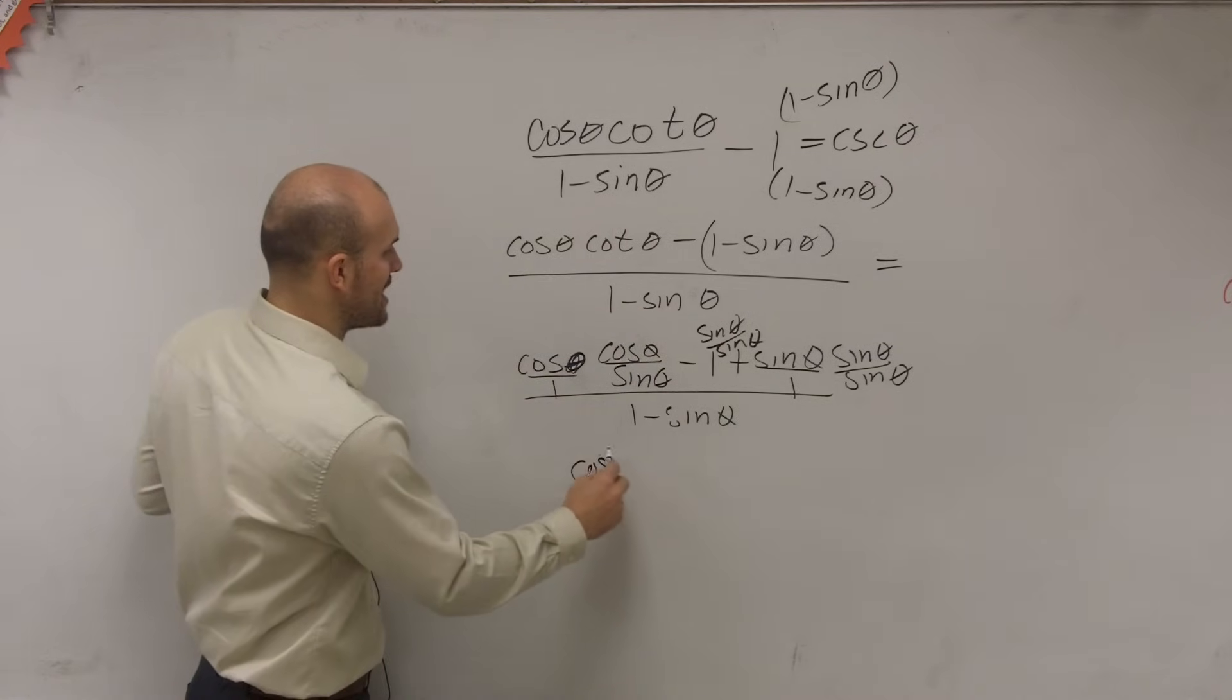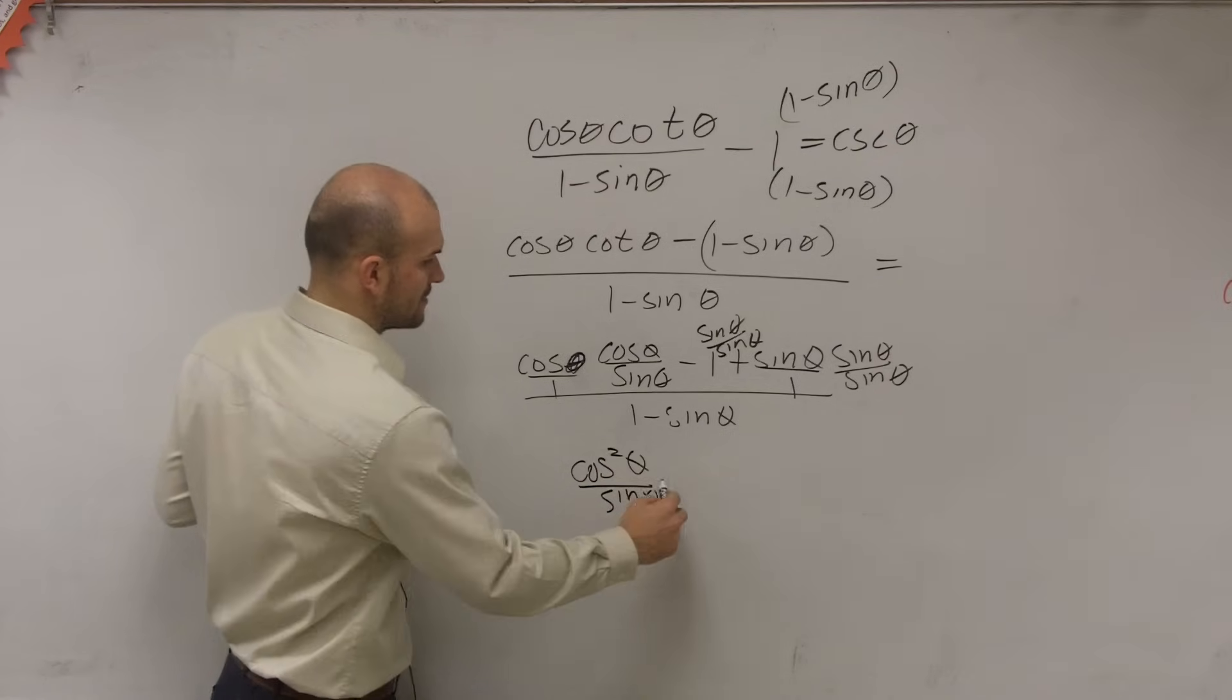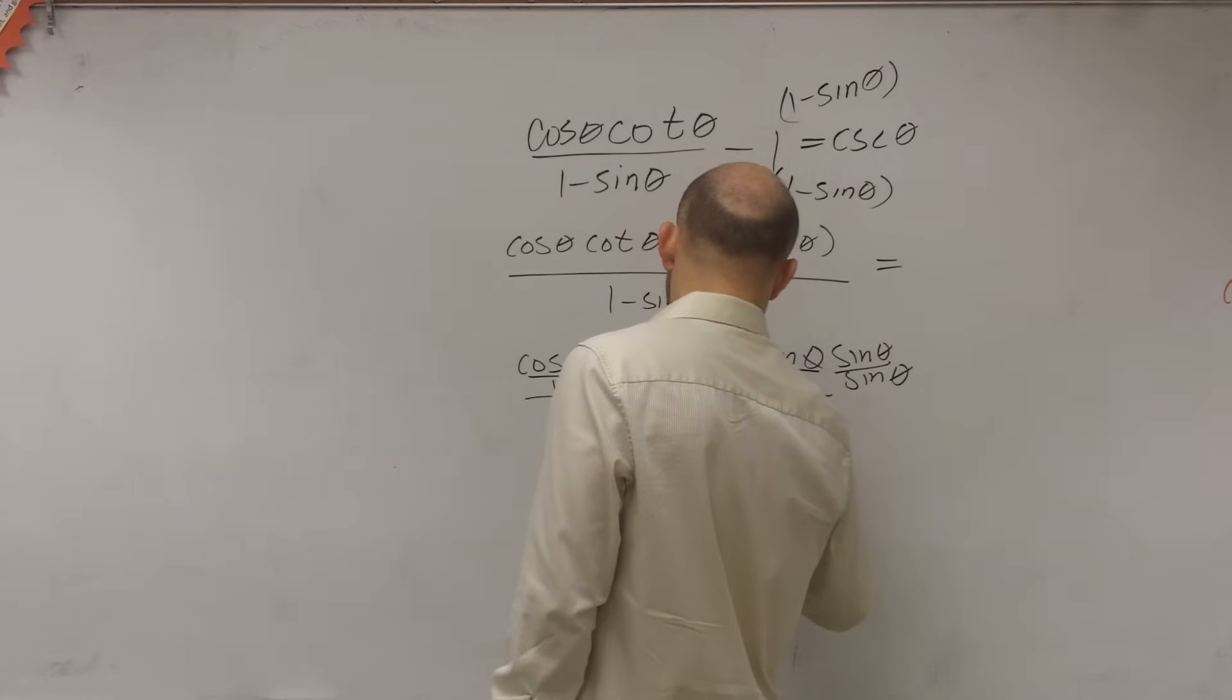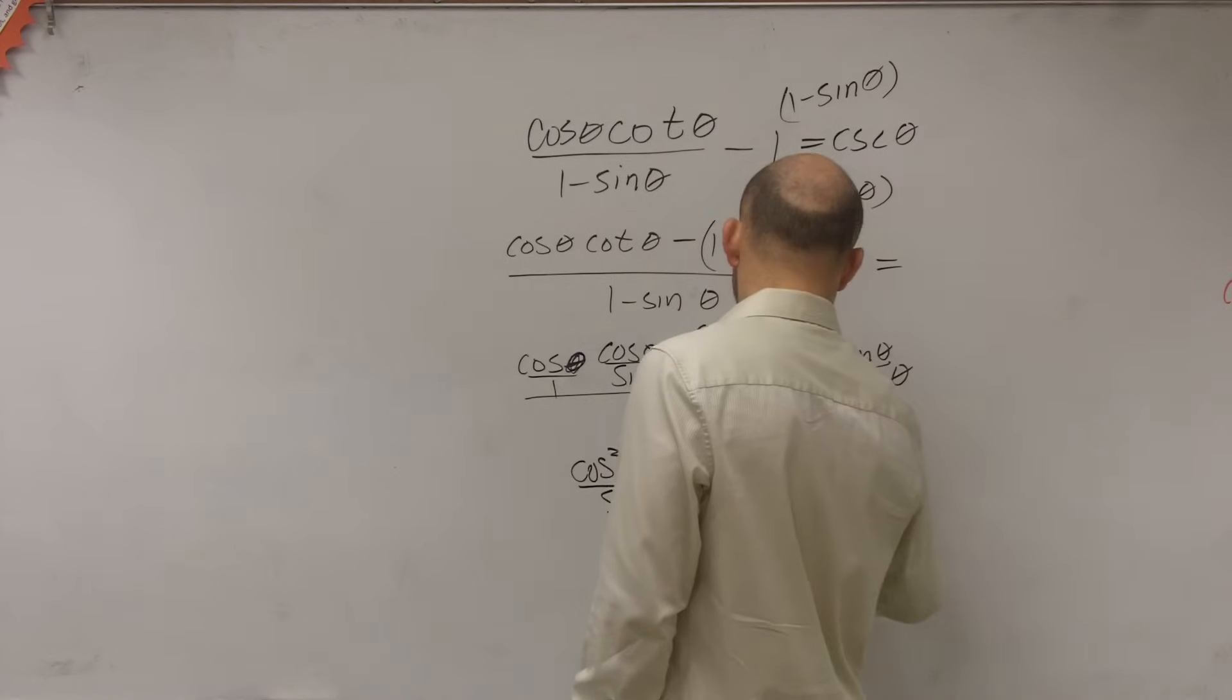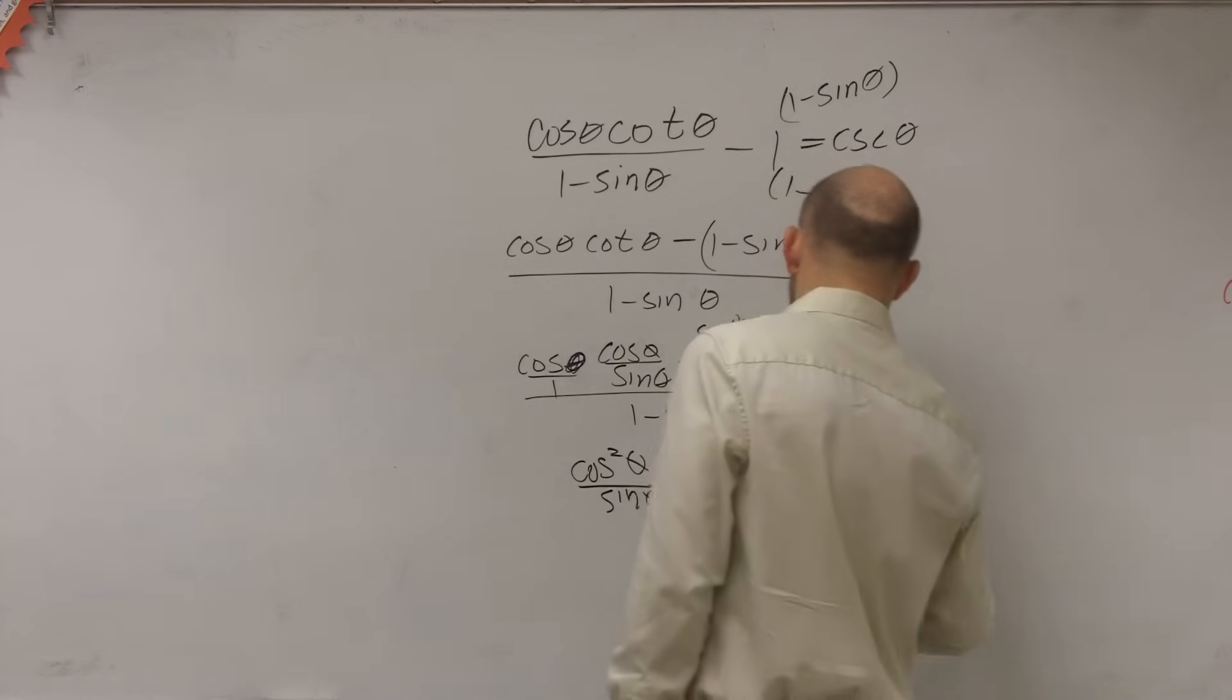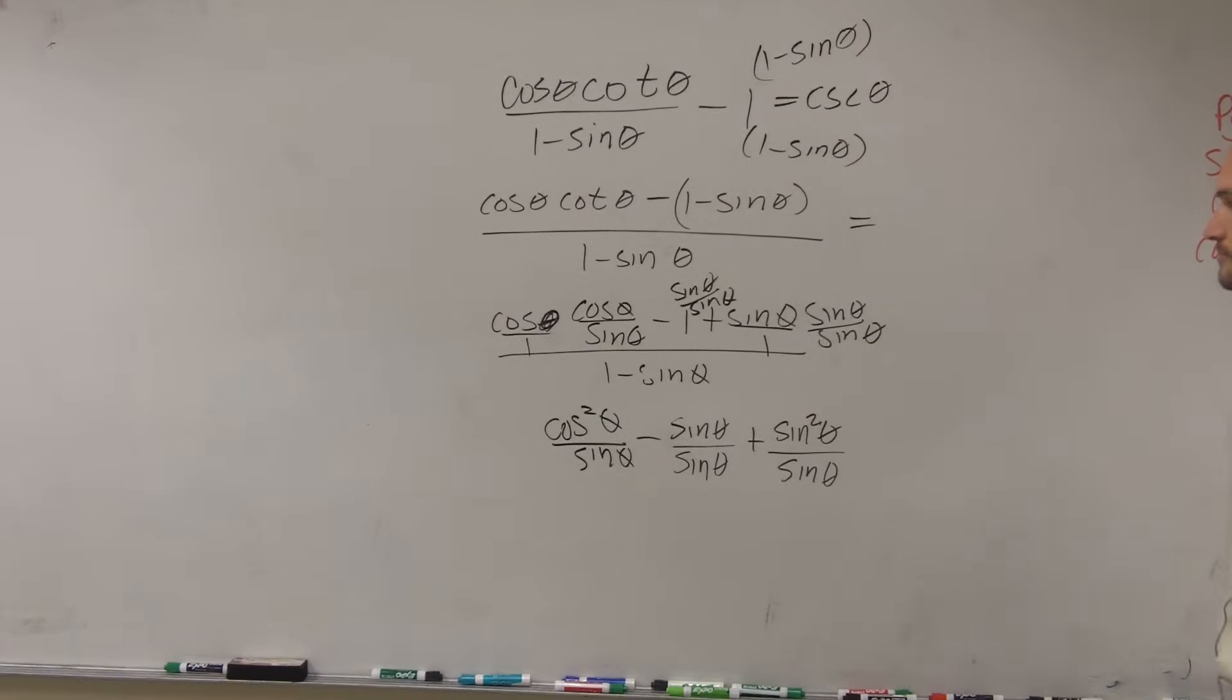minus sine of theta over sine of theta plus sine squared of theta over sine of theta. So this is all supposed to equal what? Cosecant.